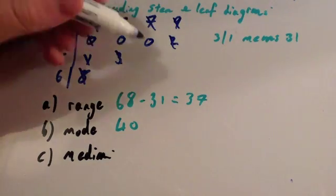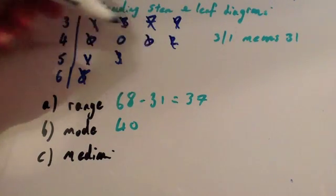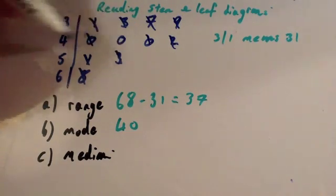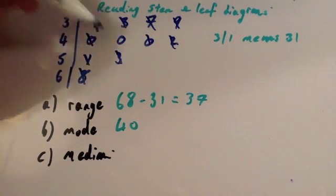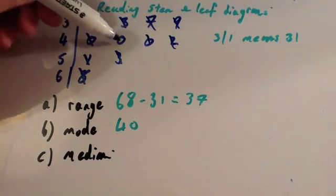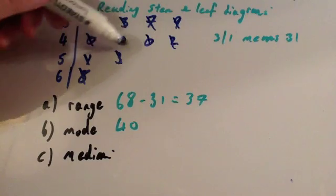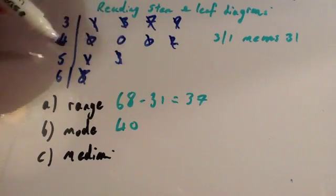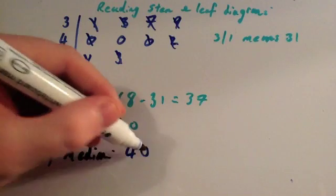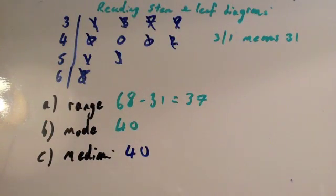Cross off the next one, 40, smallest, and the next biggest, 40. So we're left with a 0, so that means the middle number, the median, is 40. Make sure you remember to add on the 4 as well to make 40. Some students just write down 0 as the median. Well, actually, the median is 40. So that's how you read stem and leaf diagrams.